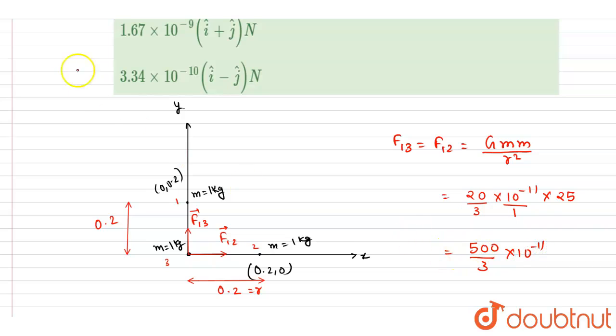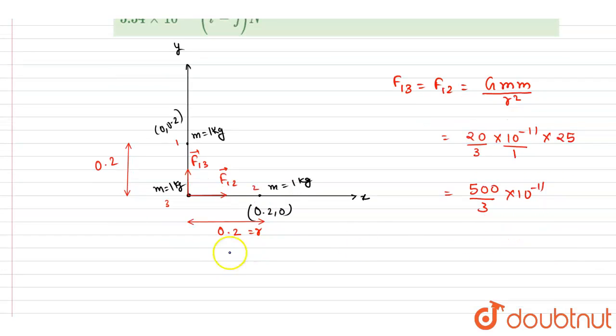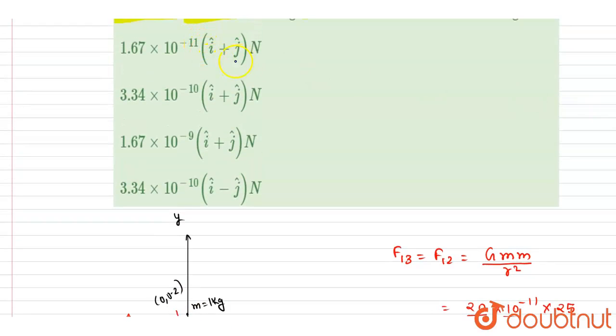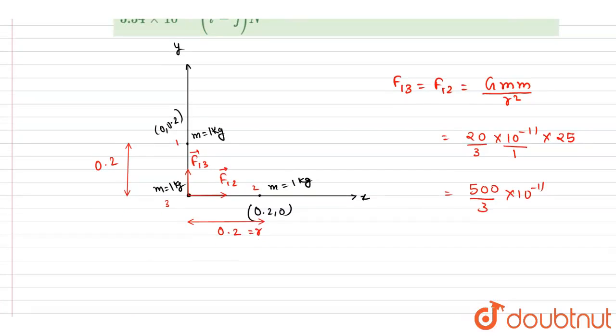Now if you write down the net force, the net force is F₁ î + F₁ ĵ. So as you can see, this is 5/3 × 10⁻⁹ in unit vectors.